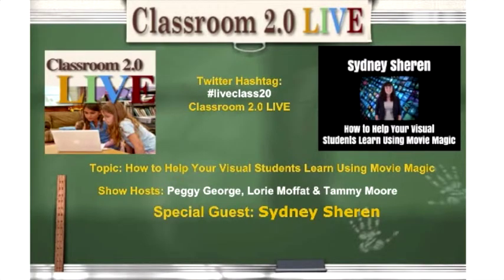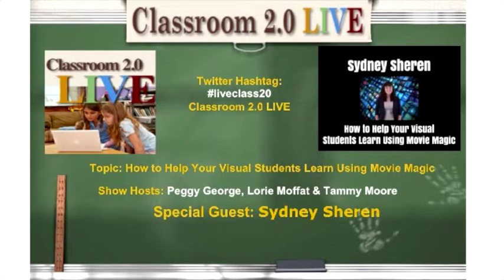Hello, everyone. Welcome to Classroom 2.0 Live for Saturday, May 16th. I'm one of the show hosts, Lori Moffett, along with Peggy George and Tammy Moore. Thanks to Tammy for doing closed captioning. Today's topic is how to help your visual students learn using movie magic. We have a special guest with us today, Sydney Sharon, who's a ninth grade high school student. I'm going to turn the mic over to Peggy, who will further introduce Sydney.